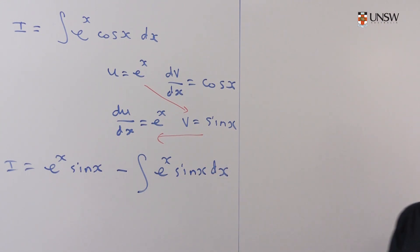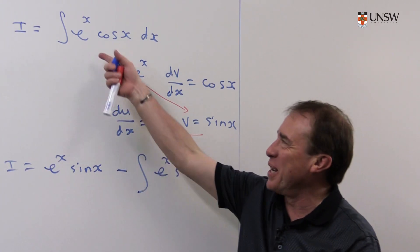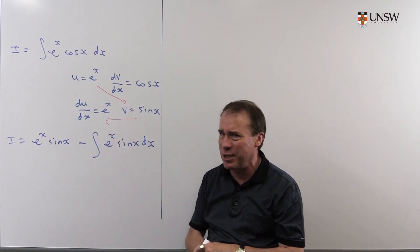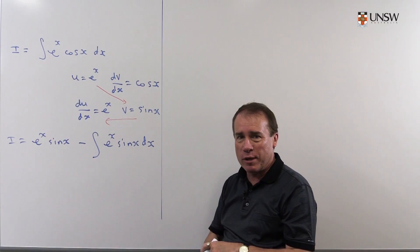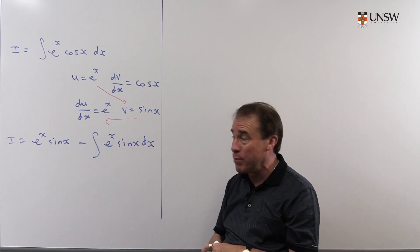Well, at this stage, you might say, well, hang on a minute, you started off with the integral of e to the x cos x, and now you've got the integral of e to the x sin x. It looks just as hard as what you started with. You've taken a problem and really rewritten it into something that looks just about as difficult as what you started with, perhaps even more complicated.